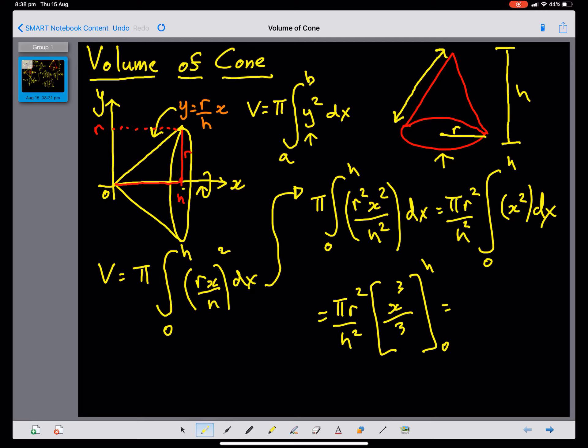We now need to substitute in our limits. We've got pi, R squared, h squared, h cubed, over 3. And the 0 limit just gives 0.